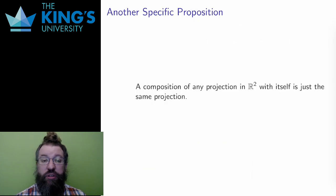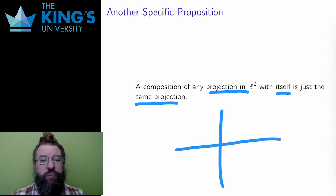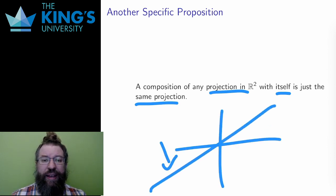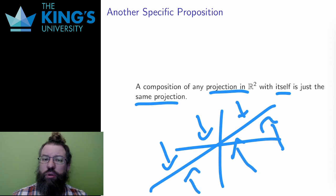Here is another proposition, another idea about transformations that is intuitively appealing and that I might want to prove. If you compose any projection with itself, the result is just the same projection. Why is that intuitive? Well, a projection in R2 is flattening everything down to a line.